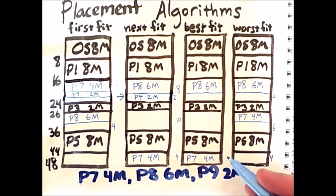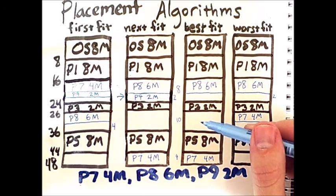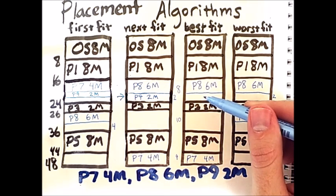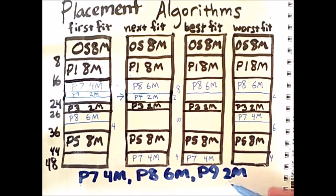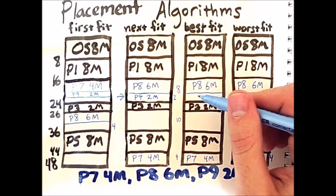Best fit considers 2 available options, a 10 megabyte slot and a 2 megabyte slot. The 2 megabyte slot perfectly fits process 9, so it places the process right here.